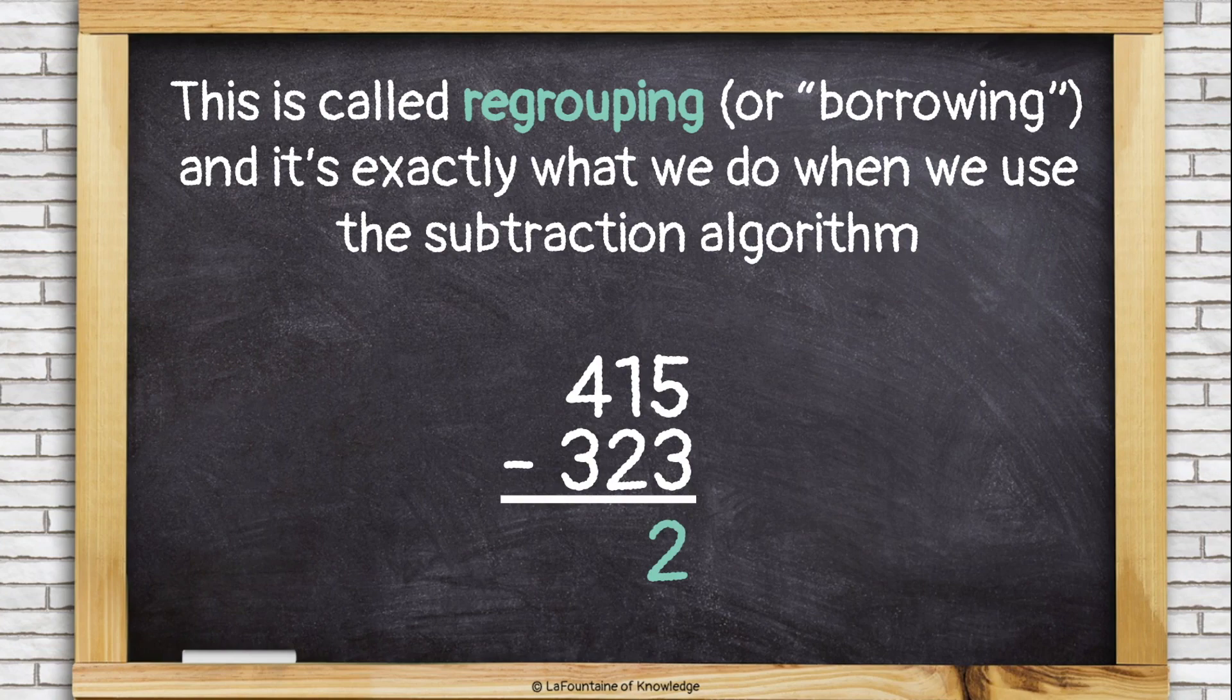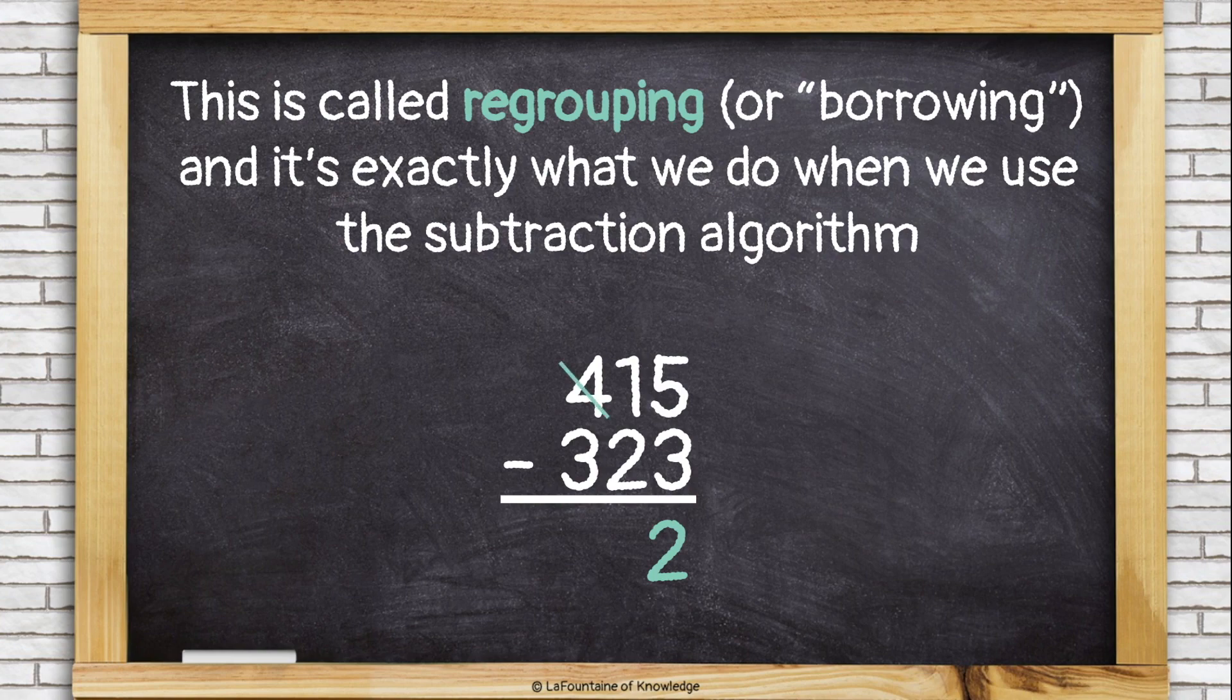So I have to regroup or borrow from the hundreds place. I take away a group of 100, so I cross off the 4. Now I only have 3 hundreds. And I turn that 100 into 10 tens and add it to that 10 I already have.